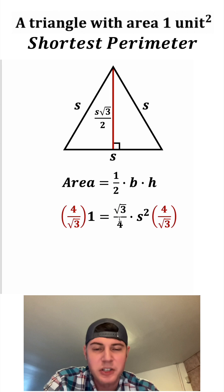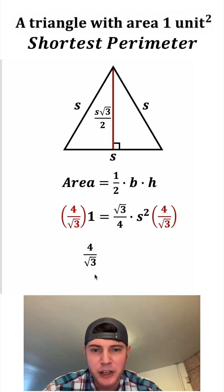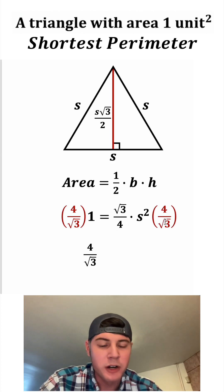Now let's multiply both sides by the reciprocal of this, four over root three. On this side, four over root three times one is just four over root three. And on this side, this fraction times this fraction gives us one.